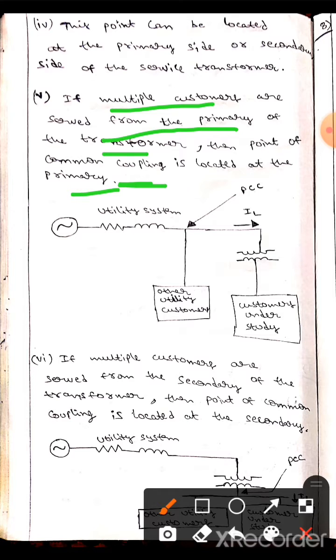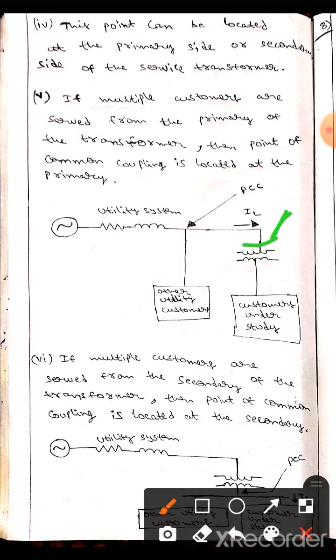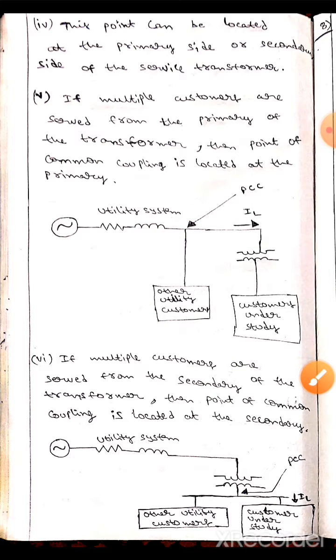It is located at the primary side. If you look at this diagram, this is the primary side of the transformer where multiple customers are served. So here, PCC will be located at the primary side.